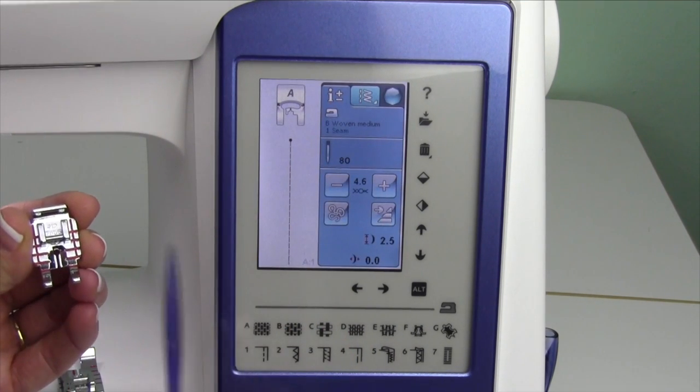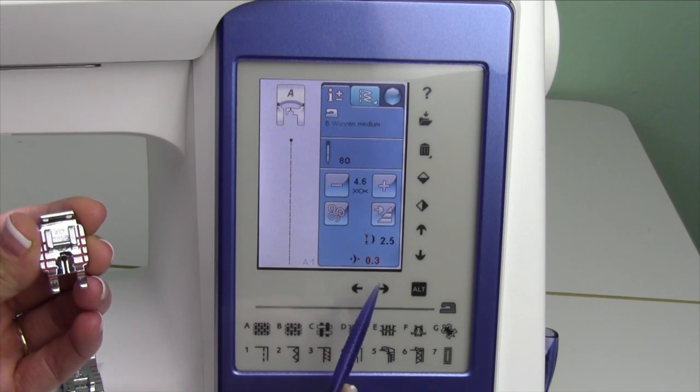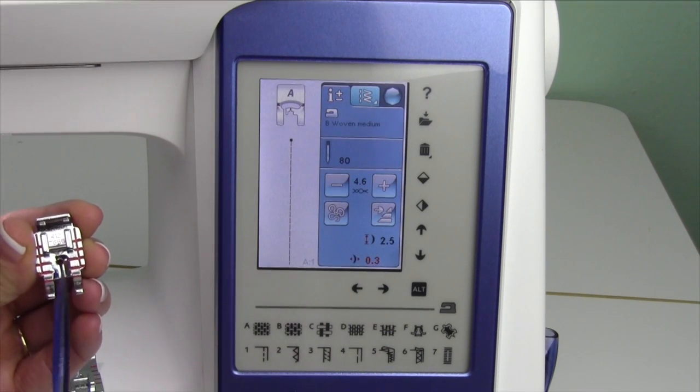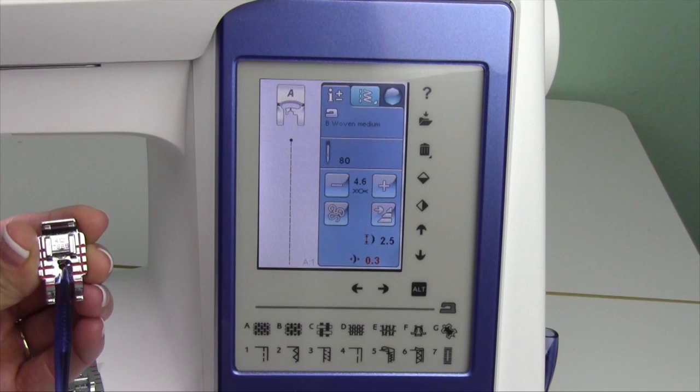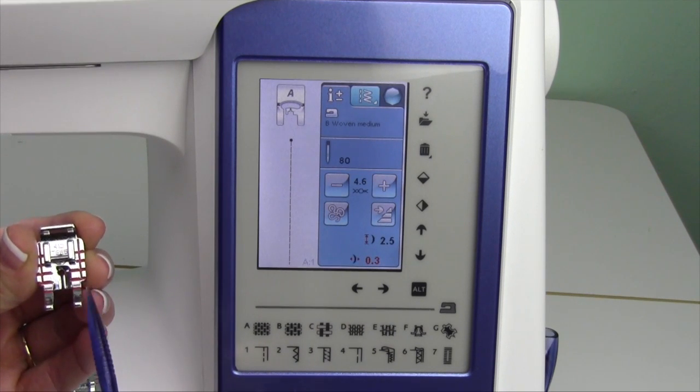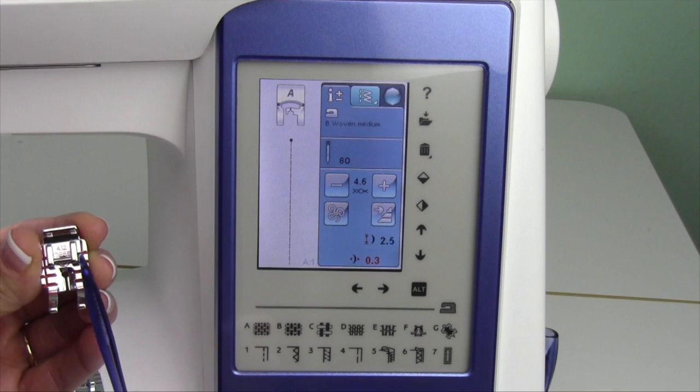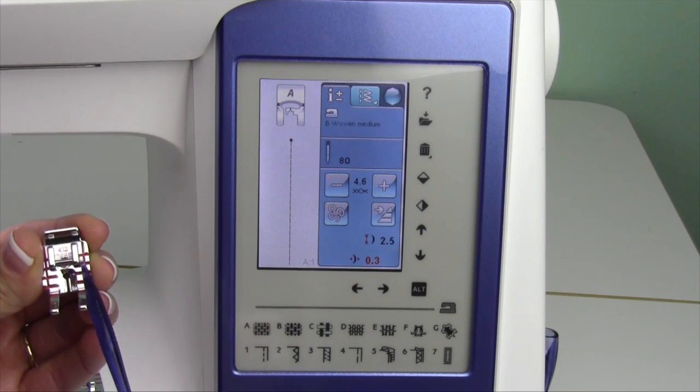If you've ever wanted to get that scant quarter inch, you can go in and move the needle position just a hair to the right and then you can still clear, you're not going to hit the foot at all. Then you'll run your fabric right along or underneath the red line of the foot.